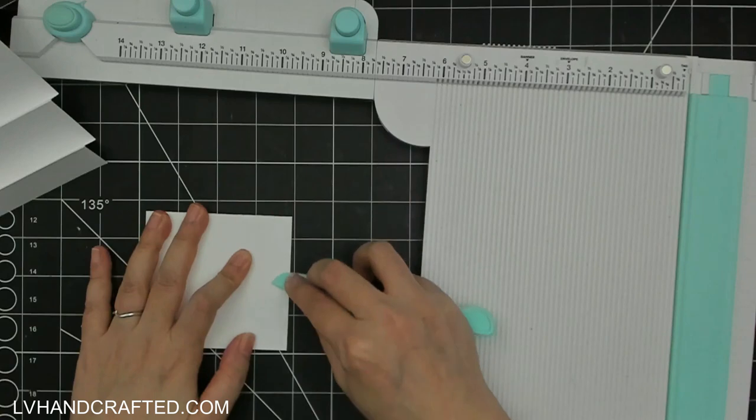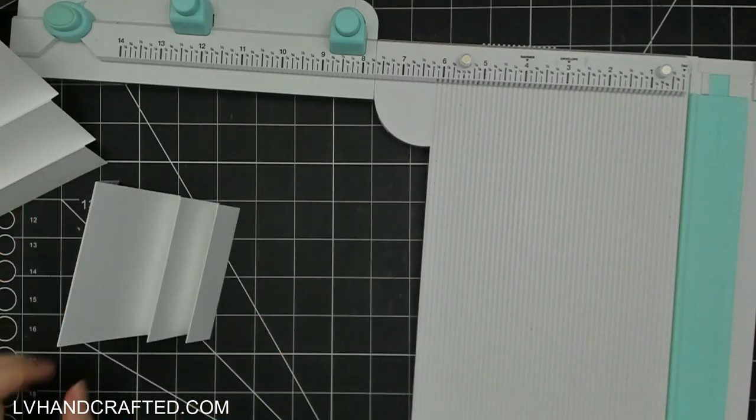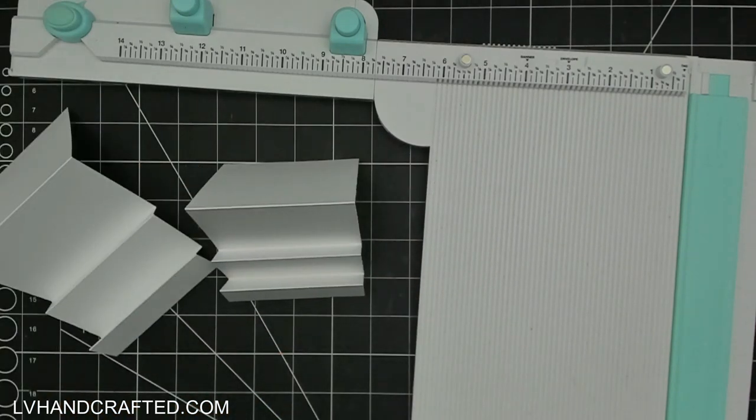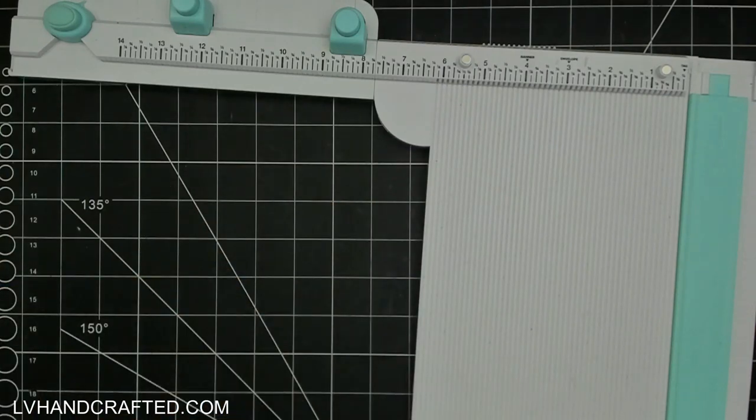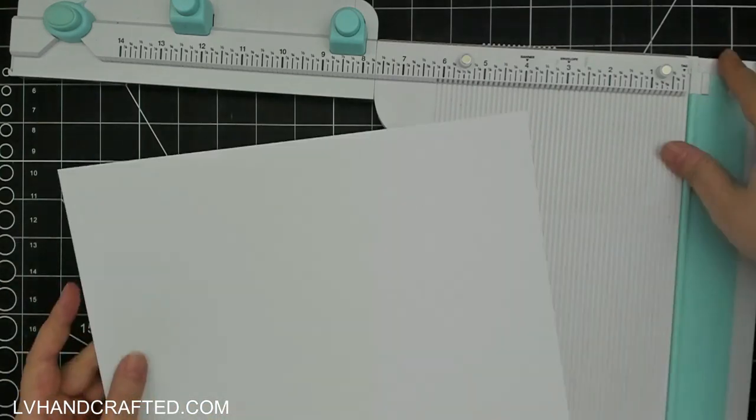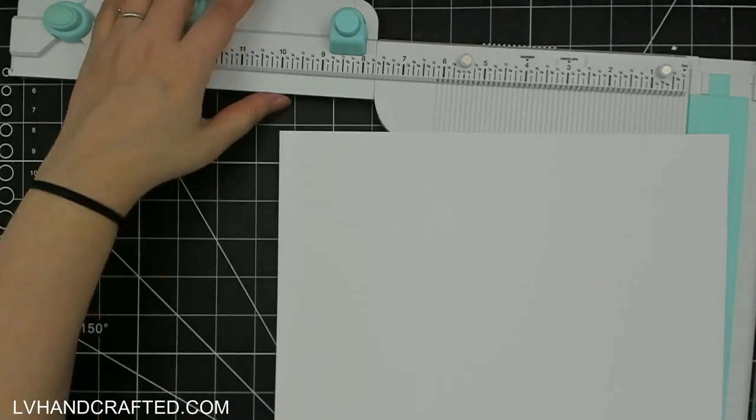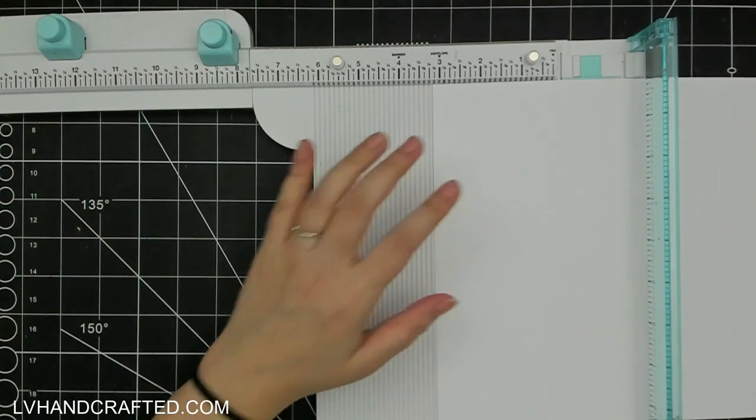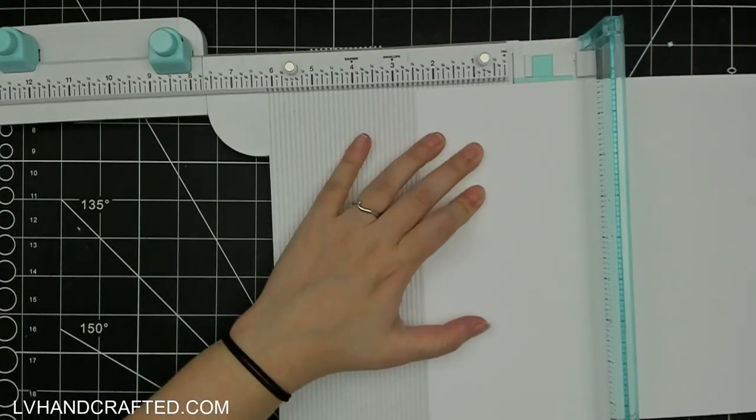So when this all folds down it's going to end up being a width of three and a half inches and a height of three and three quarters of an inch. So that's our stepper portion. Now let's cut our front most stepper. So this will be the tall portion.